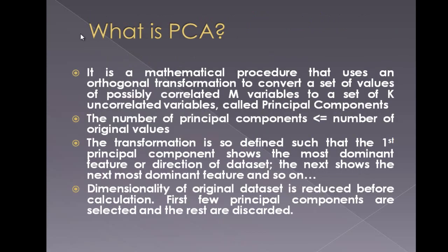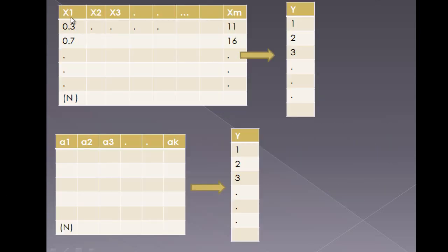Let us first try to understand PCA using this diagram. Suppose I have a 10x10 image and 50 such images — 10x10 would be 100 pixels. So x1 to xm would be 100 intensity values, and I would have 50 such rows for the 50 images. For an 8-bit image, intensity values range from 0 to 255. These are mapped to Y, which is the label for each vector, corresponding to the first person, second person, and so on.